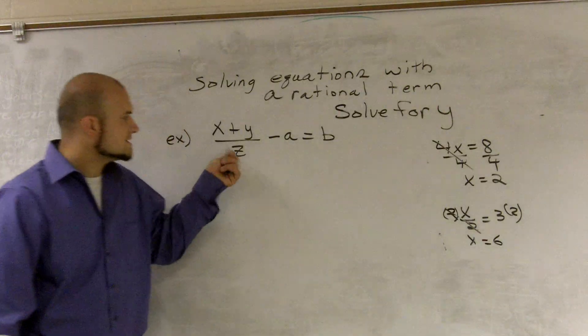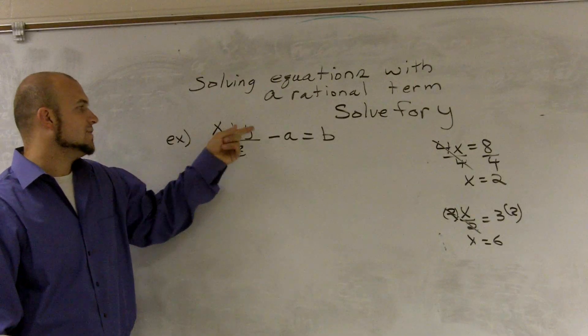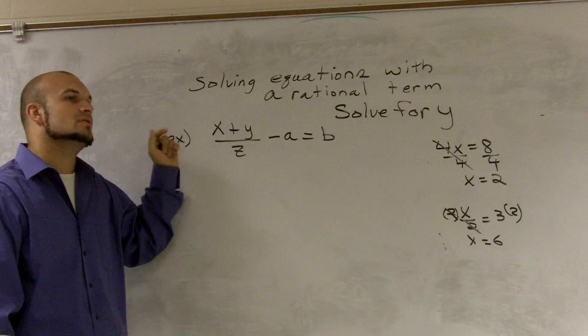Well here, it's the exact same thing. We have a z on the bottom. So what I need to do is that x plus y is divided by z. So what we need to do is we need to multiply by z on both sides.